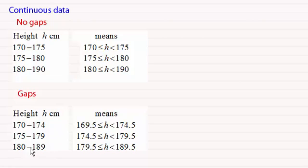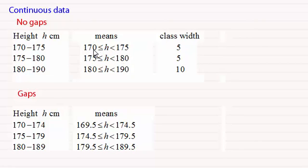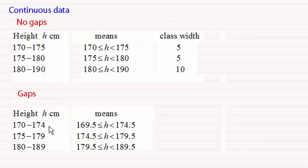Hopefully you can see what this representation means. When it comes to working out class widths for the first table, the class width is always the lower bound taken away from the upper bound: the difference between 170 and 175 is 5, and 175 to 180 is also 5, while the last one is 10 units. A common mistake with gap-type tables is thinking the class width is 174 minus 170, giving 4. But it's not — it's the difference between 174.5 and 169.5, which is 5 units.